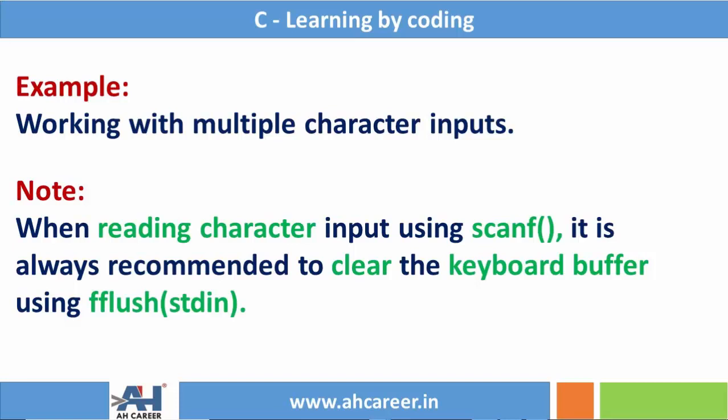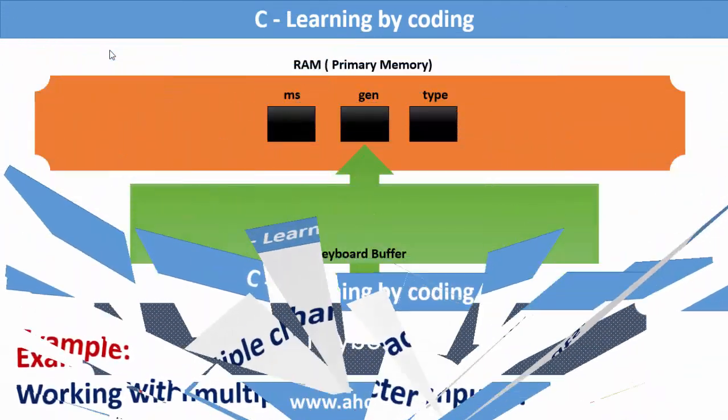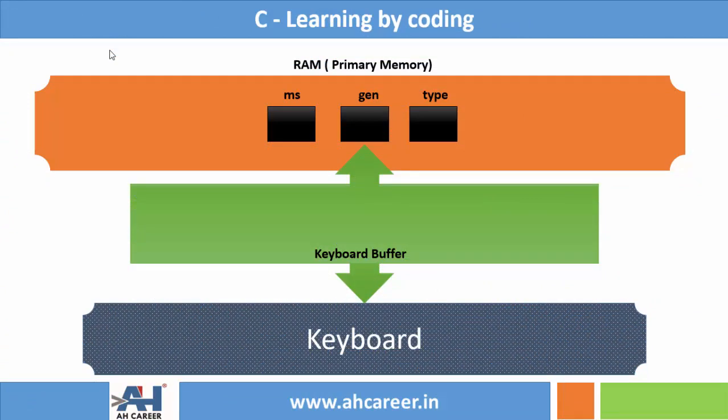To understand this concept easily, we should know how memory works internally. Whatever data we enter through the keyboard is first stored in the keyboard buffer, and from the keyboard buffer it goes to RAM memory — that is what we call primary memory. As we have declared three variables in our program, we have three memory blocks. Each memory block is going to read one byte of data from the keyboard buffer. Whatever data we type from the keyboard first goes to the keyboard buffer, and from there to RAM memory.